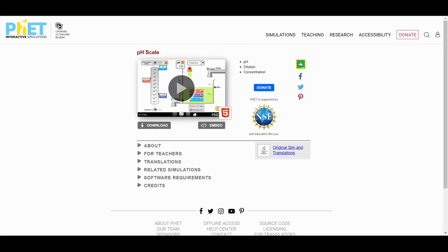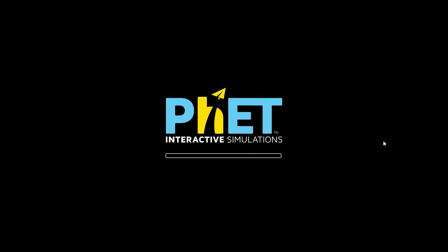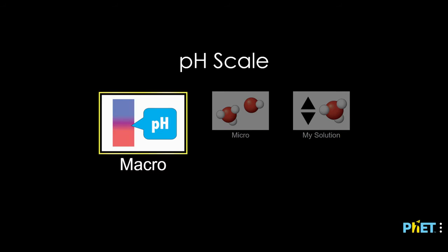Okay, so let's launch the simulation. I'm just going to click here. This is an HTML5 simulation, so this will run on all kinds of different devices. For this video, we're going to take a look at the pH scale at the macro level. So I'm going to click on macro to open this up.